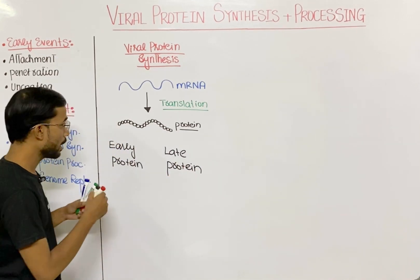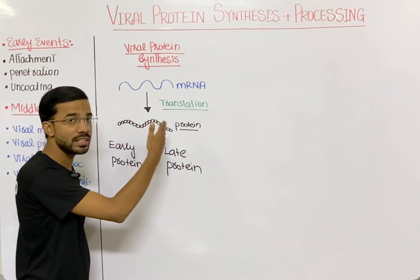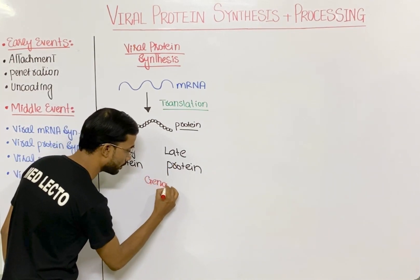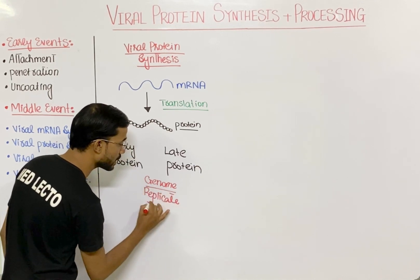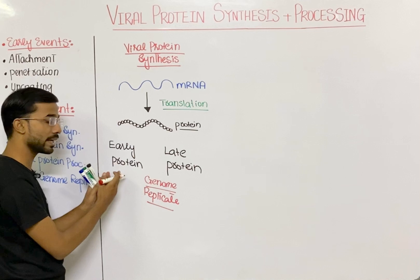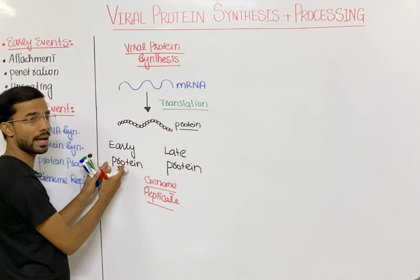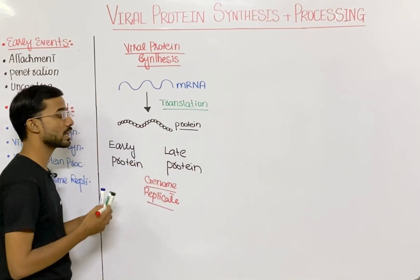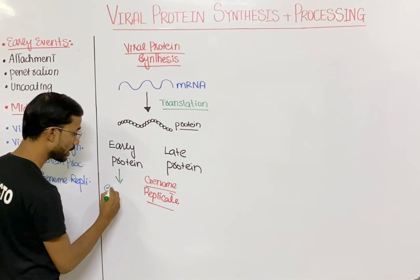In the synthesis of proteins, there are two important categories. Before the replication of the genome, you will see the synthesis of early proteins. After genome replication, you will see late protein synthesis. Those proteins that are translated before genome replication are called early proteins.